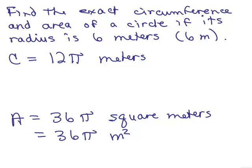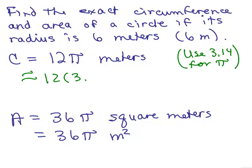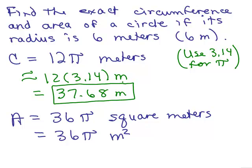Now let's approximate it. Let's use 3.14 for pi to get an approximation. It asks for the exact one, but let's see approximately how long that really is. So this is approximately 12 times 3.14 meters, which is 37.68 meters. You can use your calculator or just do your multiplication for scratch work.